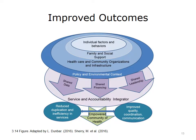This model was designed at Johns Hopkins by Melissa Sherry and colleagues at the School of Public Health. It accounts for individual factors, family and social support, health care and community organization, infrastructure, and policy and environmental context. It allows for an ecosystem and a service and accountability integrator, where a health care organization could bring together different factors and organizations — sharing data, finances, and leadership — to produce an empowered community of health with reduced duplication and inefficiency, and improved quality, coordination, and communication.